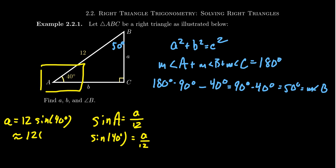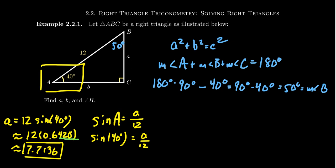If you type it in correctly, sine of 40° ≈ 0.6428. Multiplying by 12 gives approximately 7.7136. It's best to do all approximation steps in the calculator to keep as many decimal places as possible and ensure the final answer is accurate.